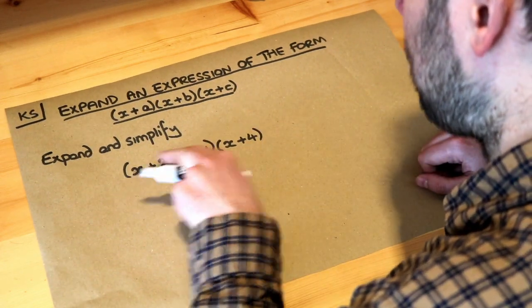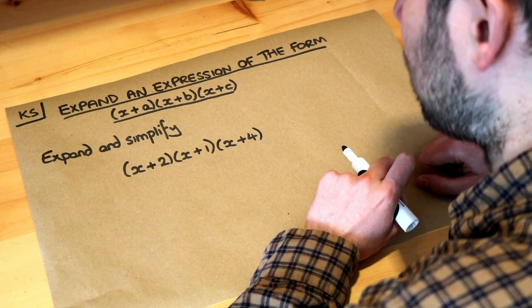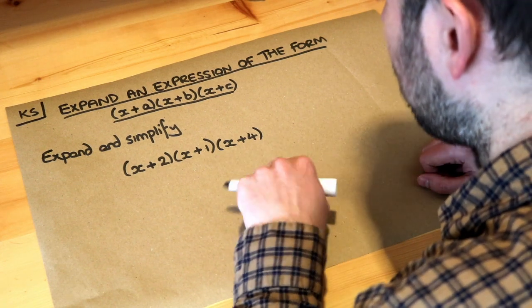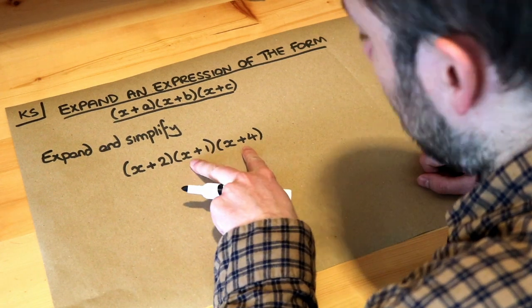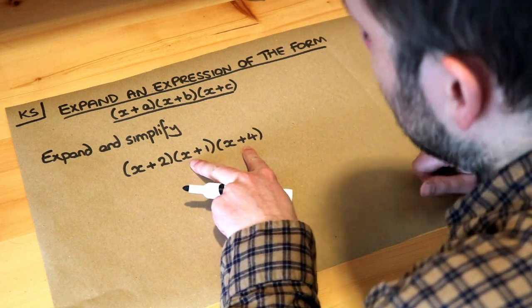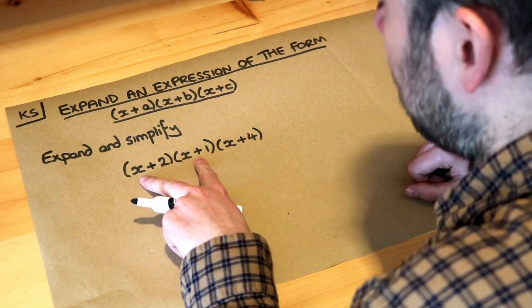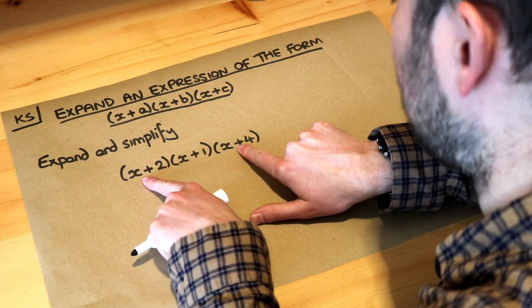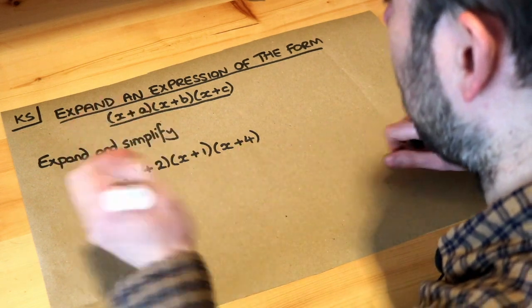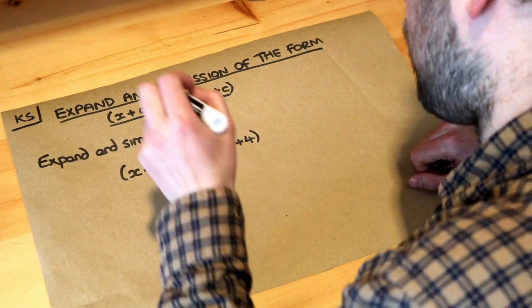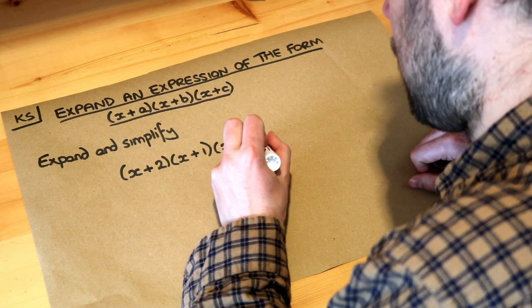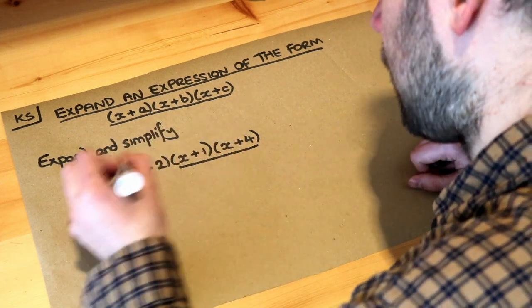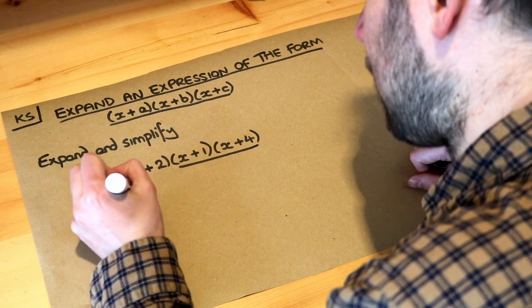Now if you have three brackets like this, what we need to do is multiply two of the brackets together first. So we could multiply these two brackets first, which is what I tend to do, or you can multiply these two brackets first. Theoretically you could multiply the other two first, but I think that's a bit more obscure. So I'm going to first multiply these two brackets together. Let's do that on the next line.